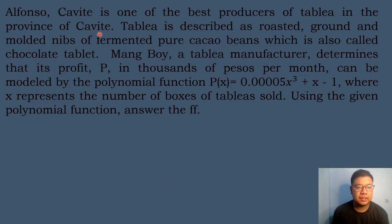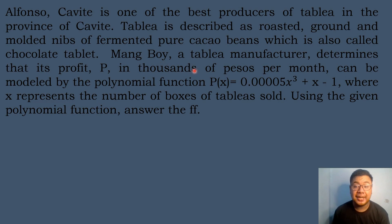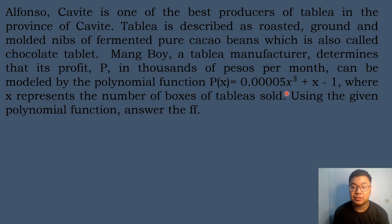Let's have our first example. Alfonso Cavite is one of the best producers of Tableya in the province of Cavite. Tableya is described as roasted, ground, and molded nibs of fermented pure cacao beans, which is also called chocolate tablet. Mangboi, a Tableya manufacturer, determines that its profit P, in thousands of pesos per month, can be modeled by the polynomial function P(x) = 0.00005x³ + x − 1, where x represents the number of boxes of Tableya sold.